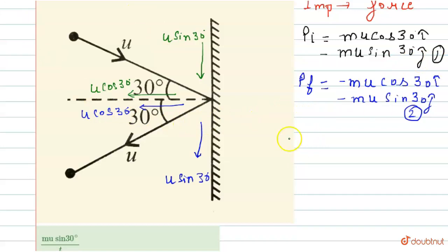Now we'll find the change in momentum. Change in momentum is equals to final momentum minus initial momentum.